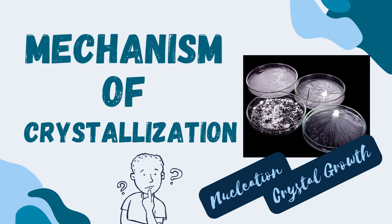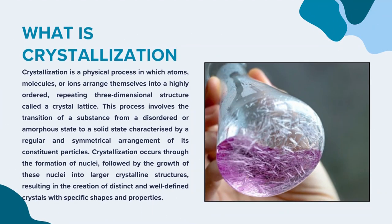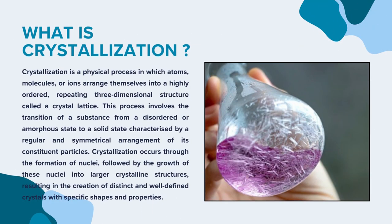Before moving towards the mechanism of crystallization, we will briefly discuss what crystallization is. Crystallization is when tiny building blocks like atoms, molecules, and ions come together in a very organized way to make a solid shape that repeats itself in three dimensions. This happens when a shapeless material turns into a solid with a neat and even arrangement of its parts.